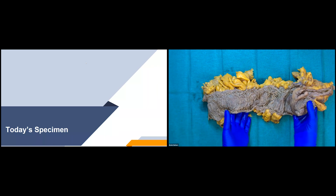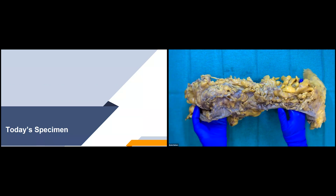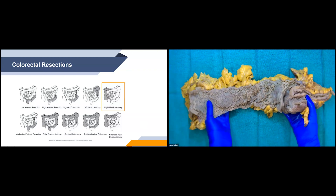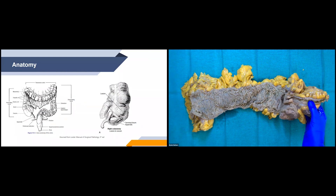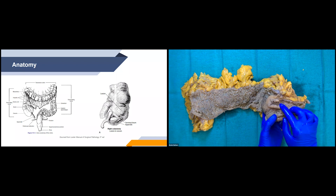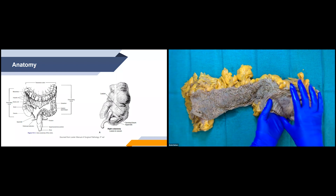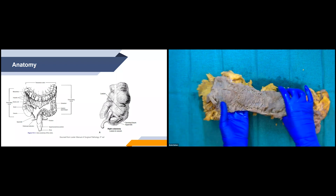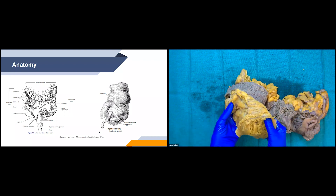Now we'll go through a little bit of the anatomy of the right hemicolectomy and what all is included with the right hemicolectomy specimen. Here is a diagram showing all the different types of colorectal resections. The one highlighted in the orange square is the right hemicolectomy specimen. It includes a portion of the terminal ileum going into the ileocecal valve, then our cecum going into our ascending colon, and then a little bit of our transverse colon. I can tell this is my transverse colon because I have my omentum attached to it here.